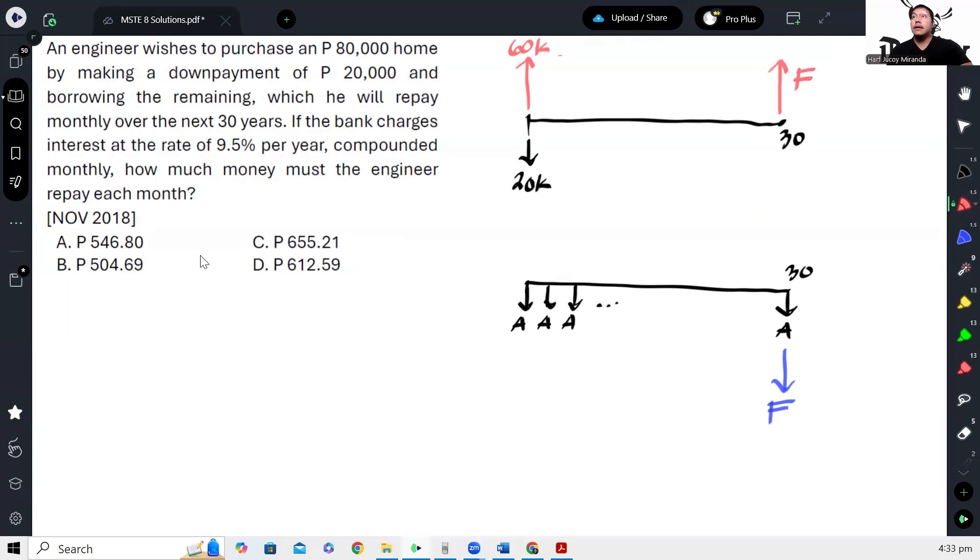Ba't parehas yan? Ganun na kasimple. So, as you can see, paano ba malalaman yung future worth netong 60K? Ano lang yan? Compound interest. Tapos yung ito naman, magiging yung formula ng annuity. Kasi ano yan, monthly payment.